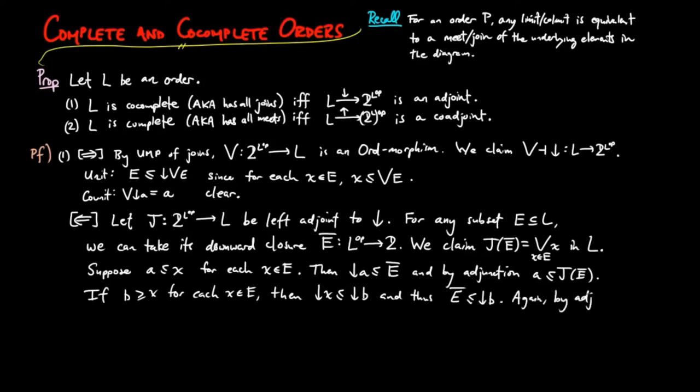Therefore, by the adjunction, J evaluated on E bar is less than or equal to B. Therefore, J evaluated on E bar enjoys the universal mapping property of the join of E in L. And two follows from duality.